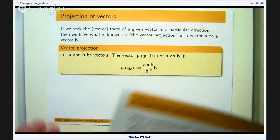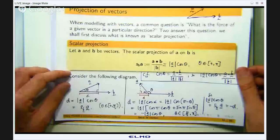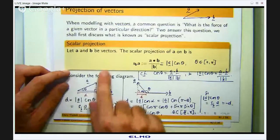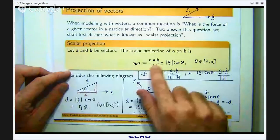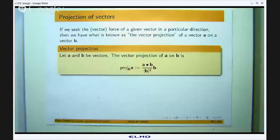We can build on the scalar projection by talking about the vector projection of one vector A on another vector. Now the scalar projection is just a number. This will just give you a number. What happens if we want a vector?